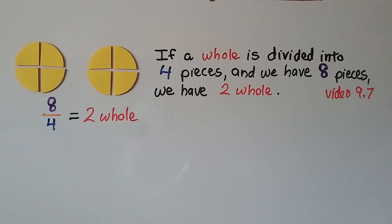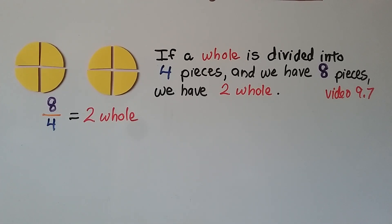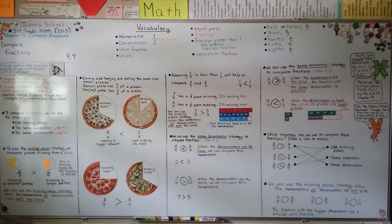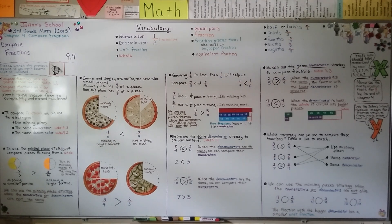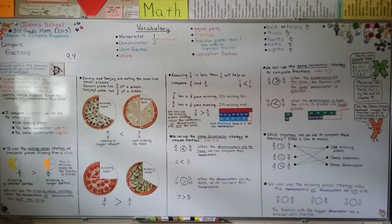We're going to learn more about this in video 9.7, where we'll be talking about equivalent fractions. To compare fractions, we can use missing pieces and compare how big the pieces are that are missing; we can use the same numerator strategy to compare their denominators; or we can use the same denominator strategy to compare their numerators. Keep working on your eight facts for the times table — when we get to the end of chapter 9, you should have them all memorized. Have a wonderful day. Bye.